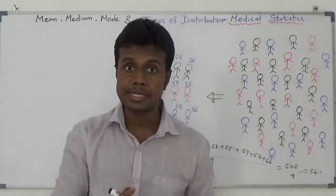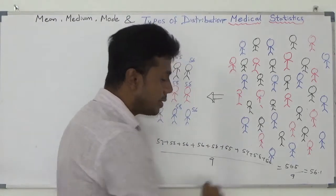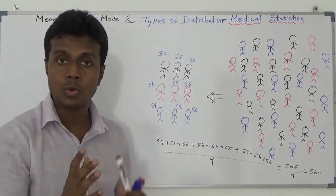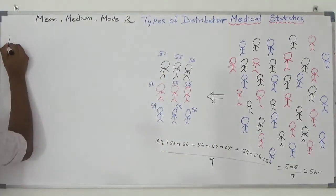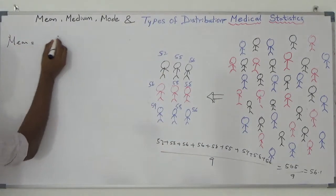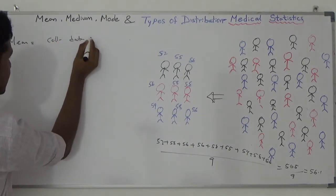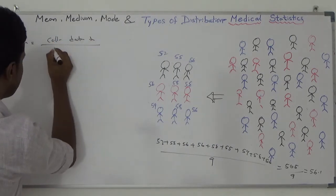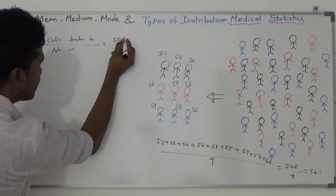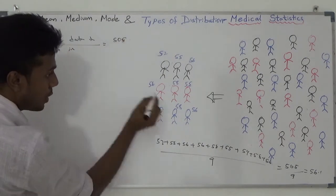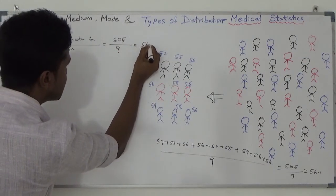Once I add them all together, the value is 505. I have to divide it by 9, so the value is 56.1. They define mean as: you collect all the individuals' values together and divide by the number of individuals. Here, 505 divided by 9 equals 56.1.